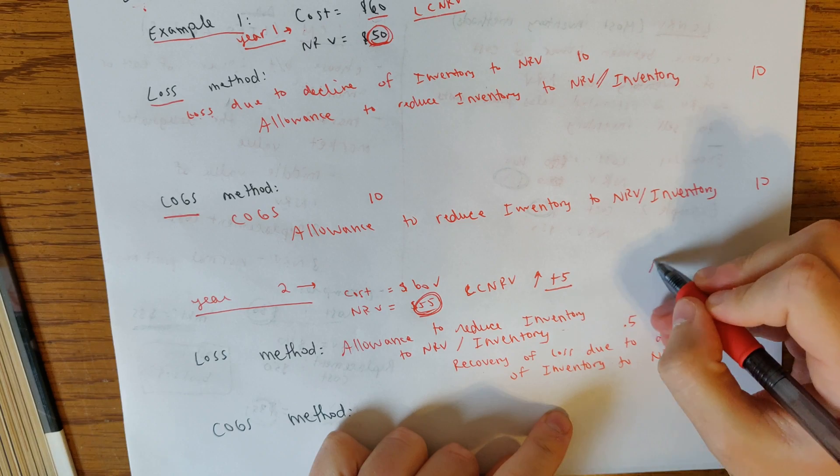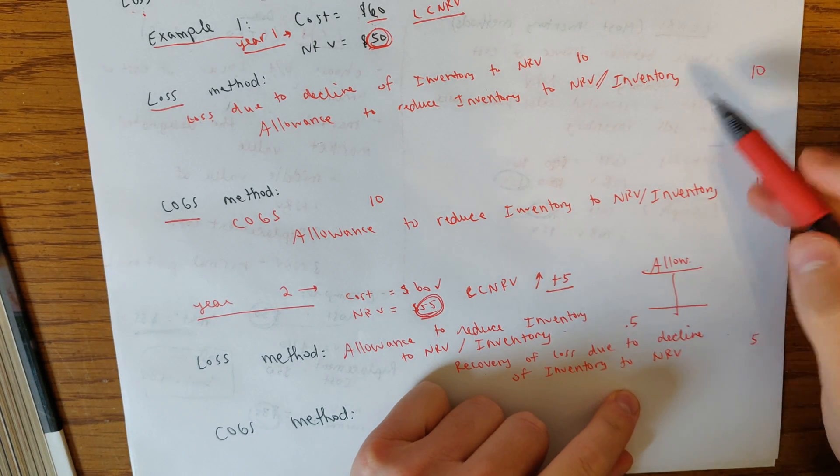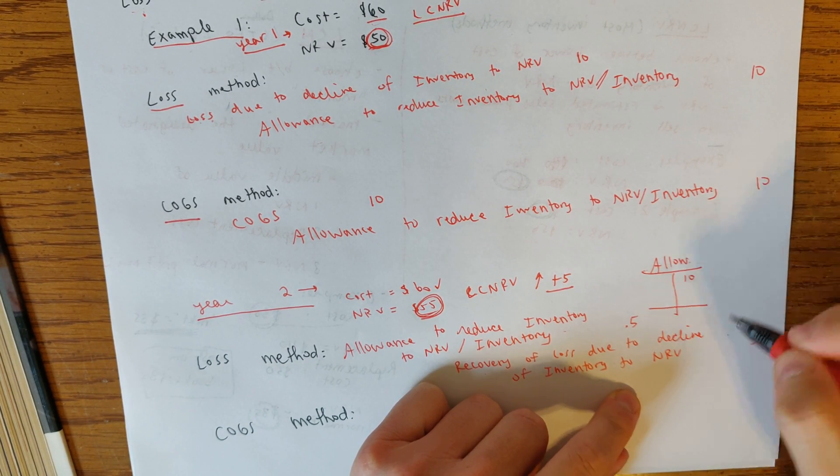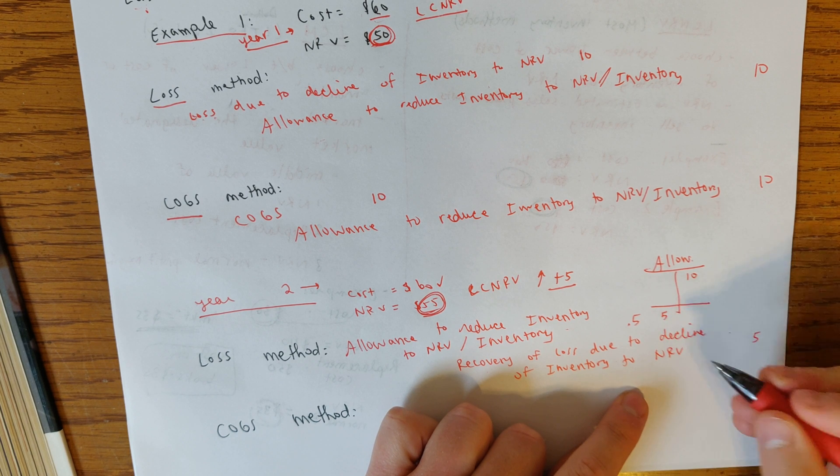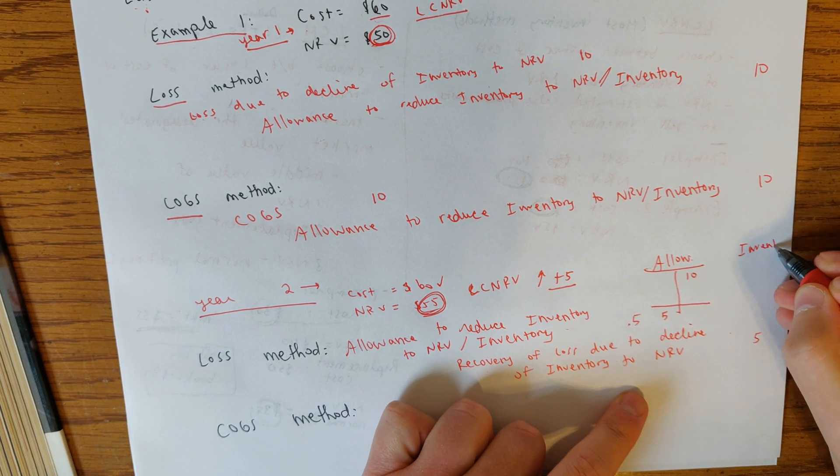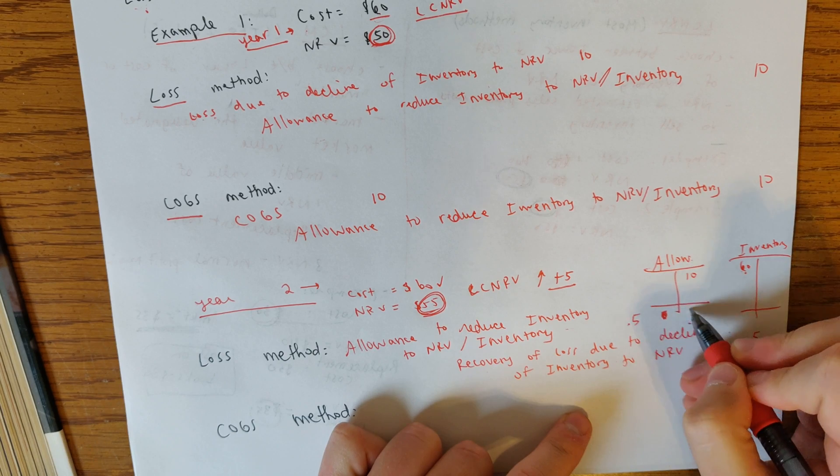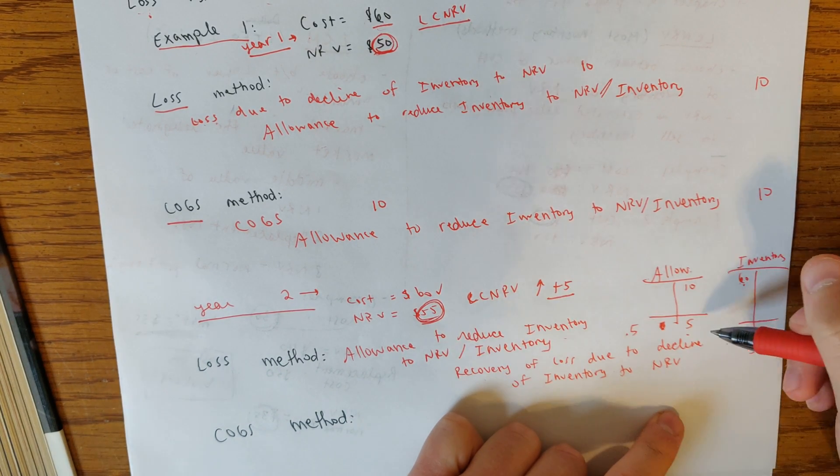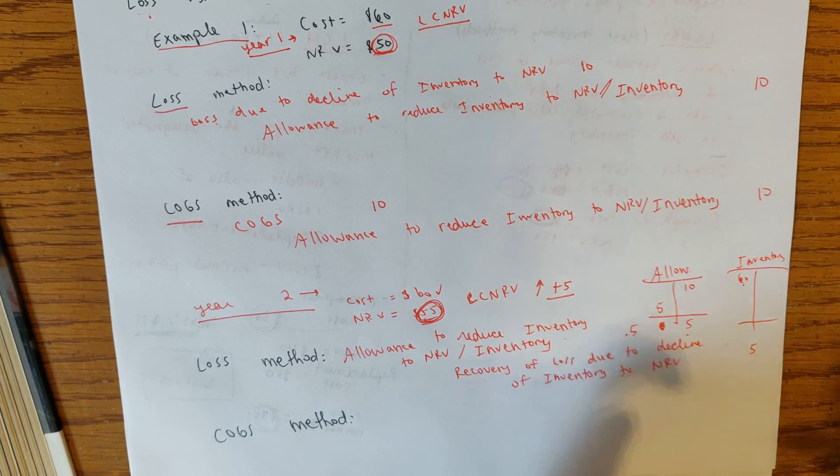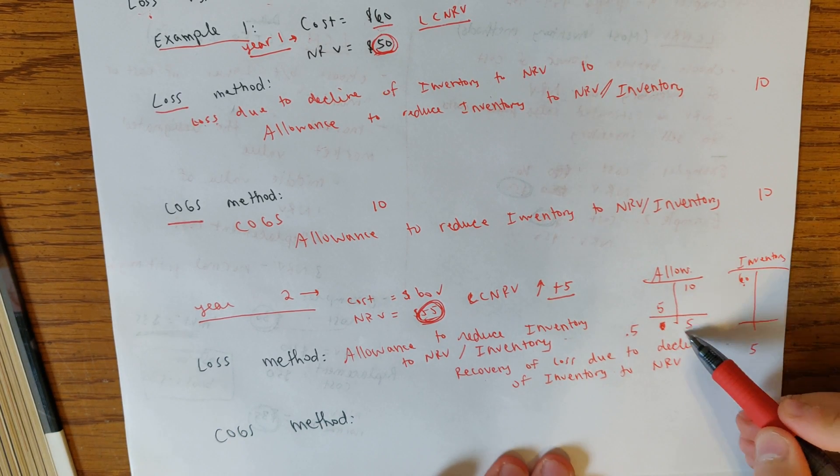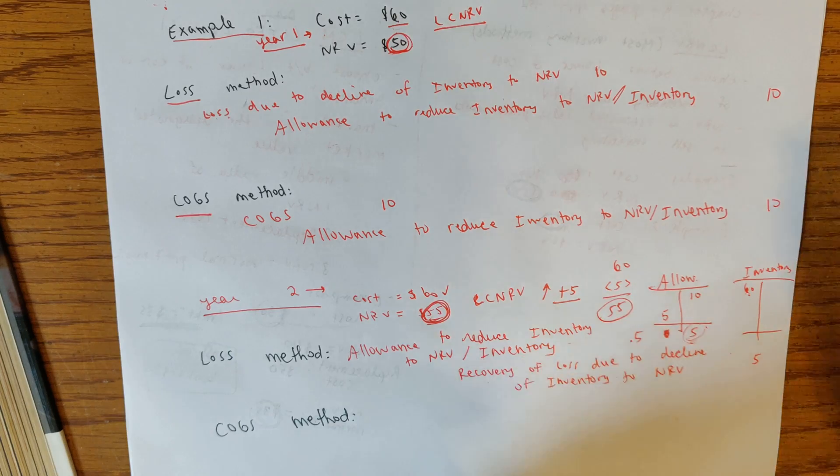The allowance to reduce inventory to NRV, what's happening there, if we think about our allowance account, we would say that last period, we would have credited it. So it would be sitting at 10 right now. But the thing about it is that we only want it to be at five. And the reason we want it to be at five is because in the inventory account, we have $60, right? And so at the end of the day, we want the five to be on this side because if we had 60 debit and we subtracted five credit, that means we would have 55 of NRV, right? So that would mean that we would have to have a debit to the allowance account and reduce that allowance account. And then it would have a balance of five credit. So then you would do 60 minus five, and then you would get 55 as your NRV and the inventory. And that's what we want.